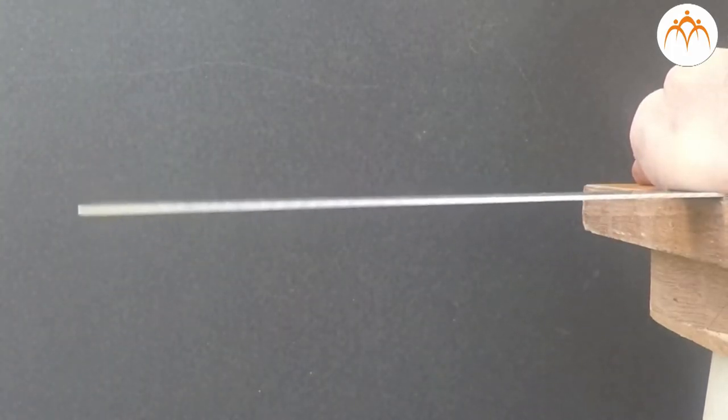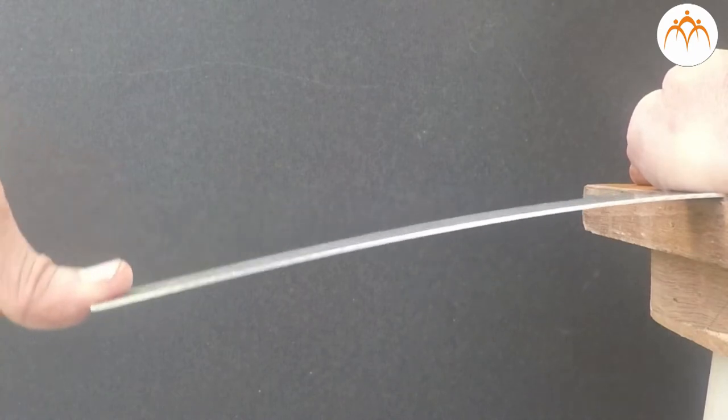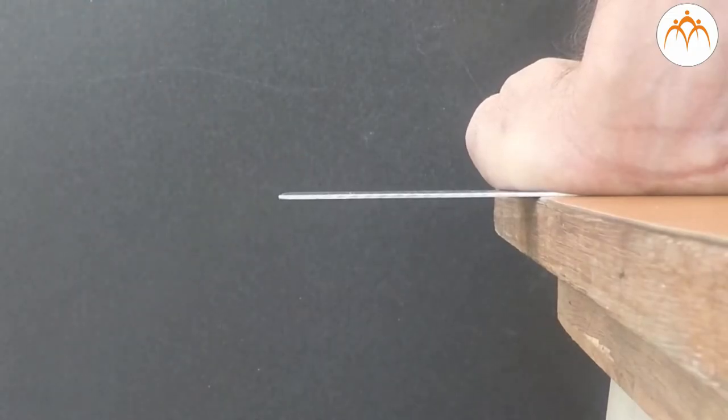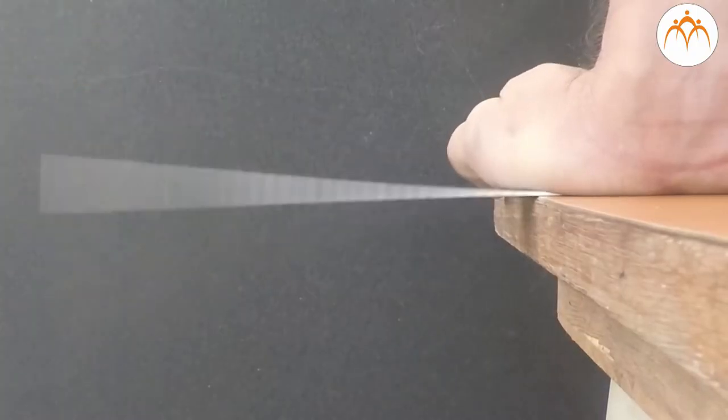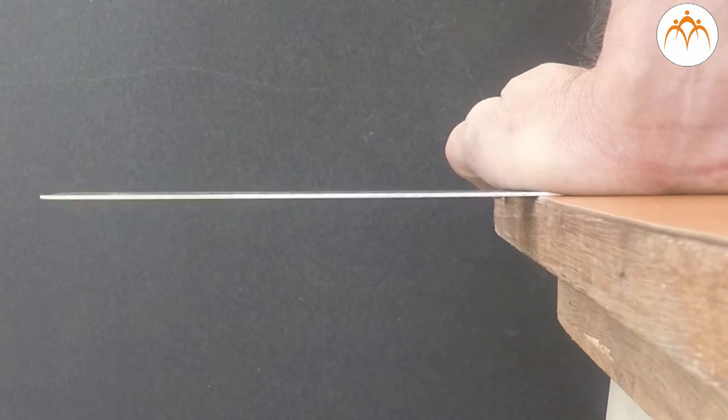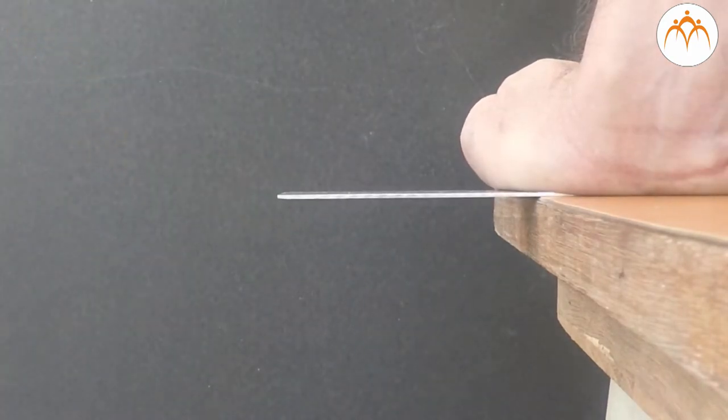Longer ruler hanging over the edge makes lower pitch. Shorter ruler gives a higher pitch. You can observe the vibrations of the ruler closely and try to correlate it with pitch. Longer ruler vibrates more slowly and has lower frequency. Shorter ruler vibrates more quickly and has higher frequency.